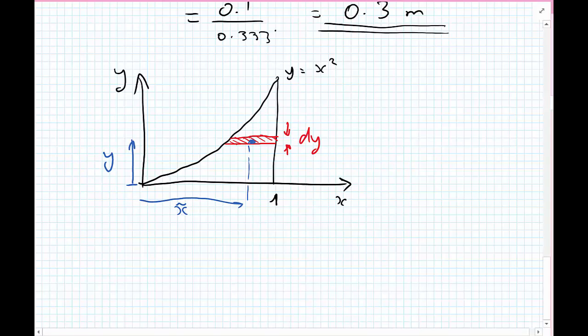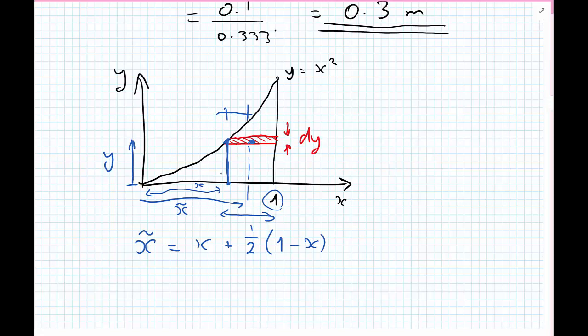If the value of x for this value of y is here, and this is the distance x tilde, we can write that x tilde equals x plus this extra distance here, which equals one half. So it's half of the distance of 1 minus x. So 1 minus x, which is this distance, and we only want half of that. So we have now x tilde and y tilde defined.